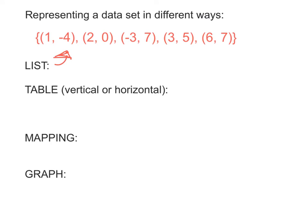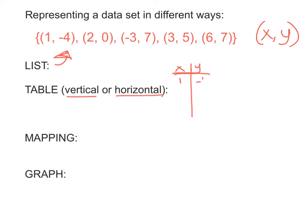Second, you might see a table representing data — either a vertical table or a horizontal table. A vertical table would be a list of our x's and y's, our inputs and outputs. So we've got 1, negative 4; 2, 0; negative 3, 7; 3, 5; and 6, 7. That's just the data listed in a vertical table. You could also see a horizontal table where your x's are on top and your y's are on the bottom, with that same data set.